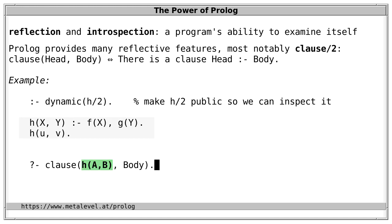Which clauses exist for this predicate? The predicate 'clause' considers the given head and yields all clauses whose heads unify with the first argument, in textual order. In this case, the very first clause already matches — the head unifies with the head in the query. The first answer is the body of the first clause, represented as a Prolog term. The variables A and B here are the same as in the given head, because unification happened implicitly, as usual in Prolog.